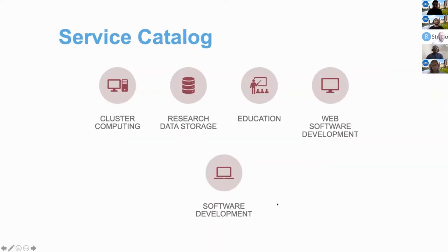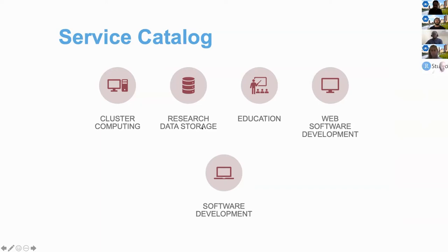Our service catalog comprises different components. First, we provide cluster computing — these are mid-range machines that are very fast and match those available at other national labs. We also provide research data storage, which is high-performance, large-capacity storage in the range of petabytes, and users can request storage in the range of terabytes for use at OSC. We also have an education component mostly geared towards user training, especially on how to get started using HPC clusters at OSC.